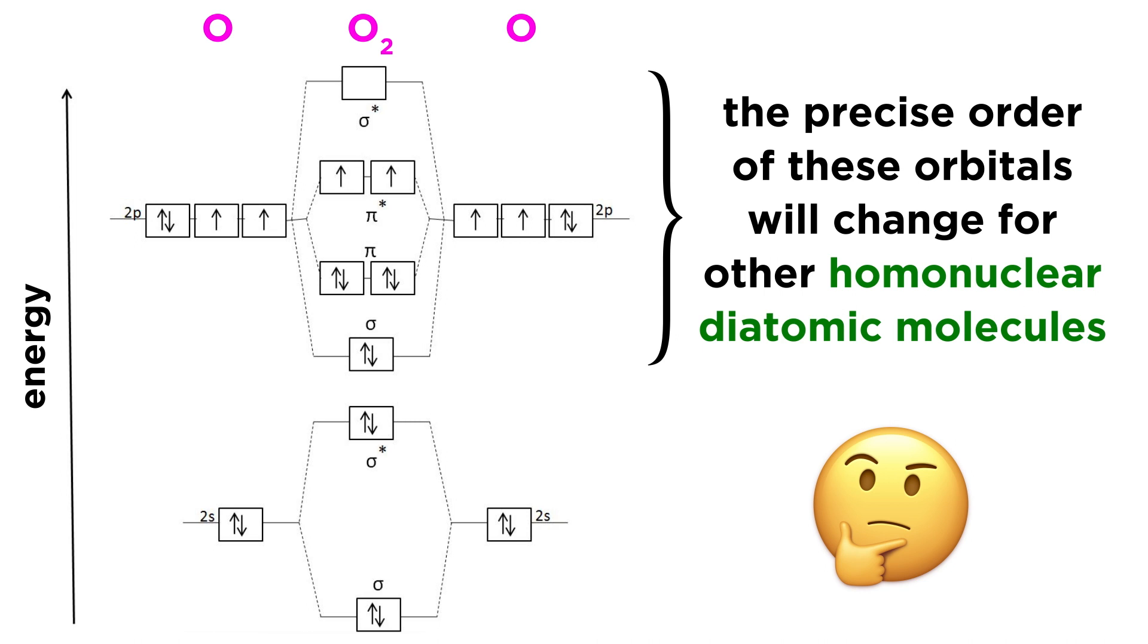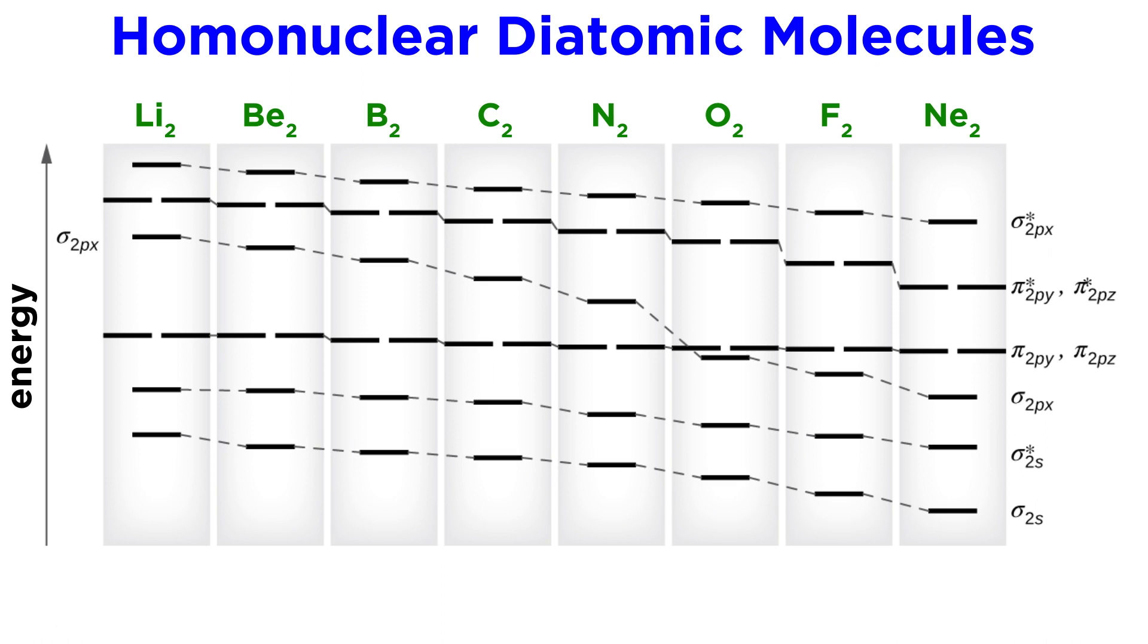Now that we are up to speed, let's go over one other thing. The molecular orbitals that result from the combination of the two p orbitals exhibit this order in O2, but this will change for other homonuclear diatomic molecules. Let's look at this diagram.